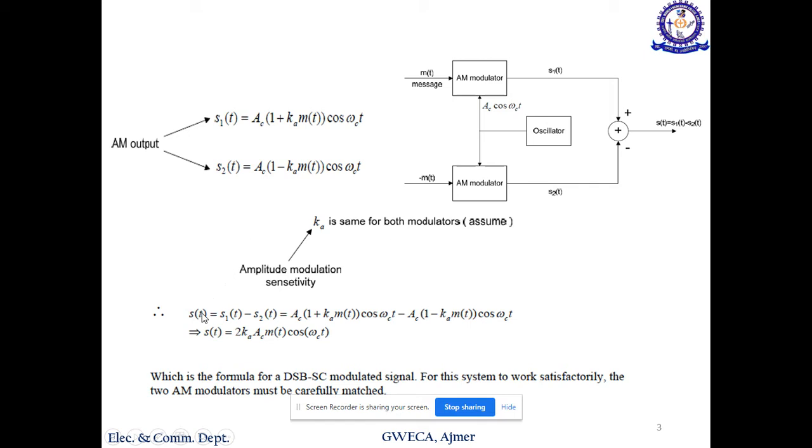The difference is given by just subtracting one from the other. We will get 2Ac m(t) cos(ωc t), which is the DSB-SC signal, hence proved. But this only works when these two are perfectly matched and automatically balanced. If they are not balanced, then the output will never be a DSB-SC signal.